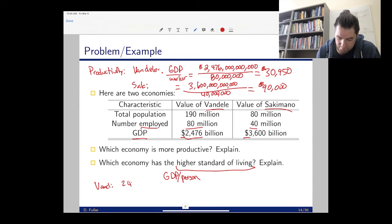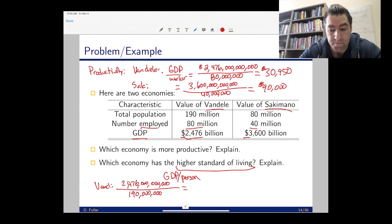Rather than divide by 80 million, I'm going to divide by 190 million for Vandelay. For Vandelay, it is their GDP, the 2.476 trillion, divided by 190 million, and that gets us $13,032. That makes sense - GDP per capita is always going to be lower than GDP per worker because not everyone in the population works.